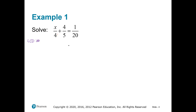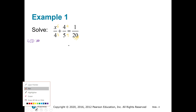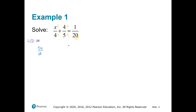The 4 has to get multiplied by the 5, and if you do it to the denominator, you do it to the numerator. The 5 has to get multiplied by the 4, and if you do it to the denominator, you do it to the numerator. Gratefully, the 20 is already a 20, so we don't have to be concerned about that. This will be 5x over 20 plus 16 over 20 equals 1 over 20.